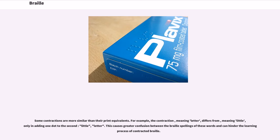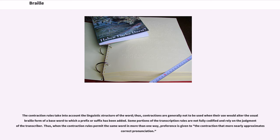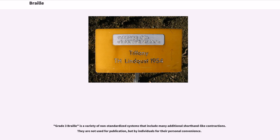Some contractions are more similar than their print equivalents; for example, the contraction meaning LETTER differs from the one meaning LITTLE only in adding one dot. This causes greater confusion between the Braille spellings of these words and can hinder the learning process of contracted Braille. The contraction rules take into account the linguistic structure of the word; contractions are generally not to be used when their use would alter the usual Braille form of the base word to which a prefix or suffix has been added. Some portions of the transcription rules are not fully codified and rely on the judgment of the transcriber. When the contraction rules permit writing the same word in more than one way, preference is given to the contraction that more nearly approximates correct pronunciation.